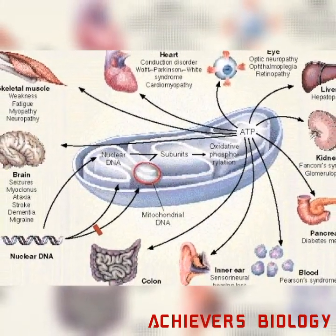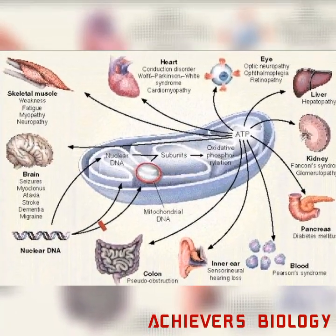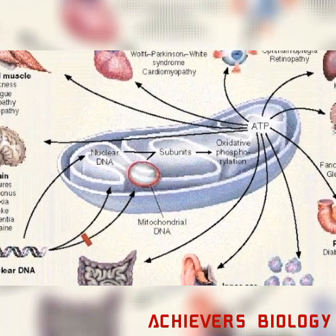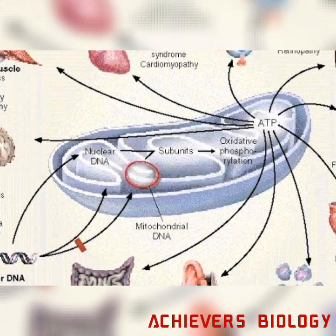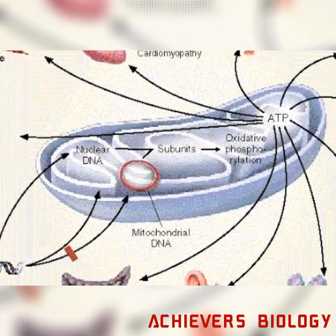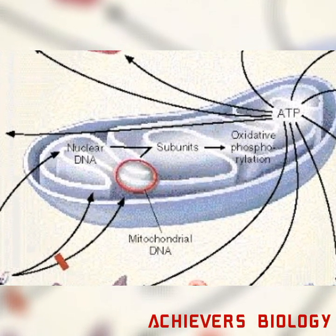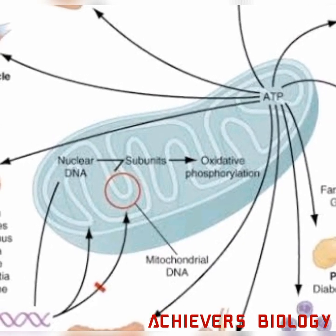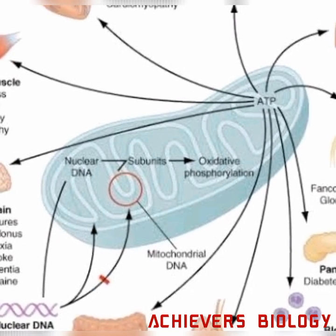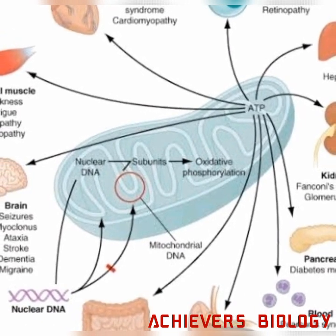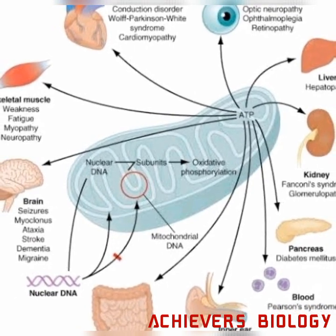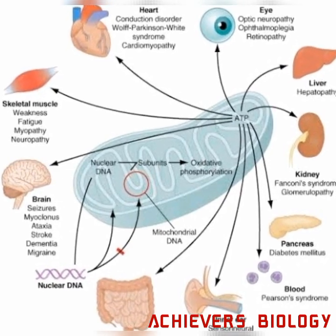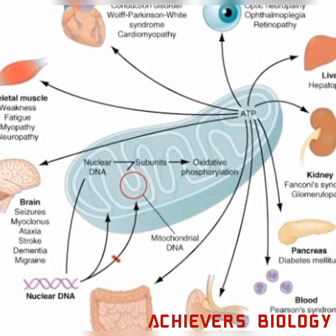A subset of these diseases may have neuromuscular symptoms, sometimes called mitochondrial myopathy. Symptoms of mitochondrial diseases include visual problems, learning disabilities, heart diseases, liver diseases, and kidney diseases. It also affects gastrointestinal, neuronal, and respiratory functions, and sometimes causes dementia.